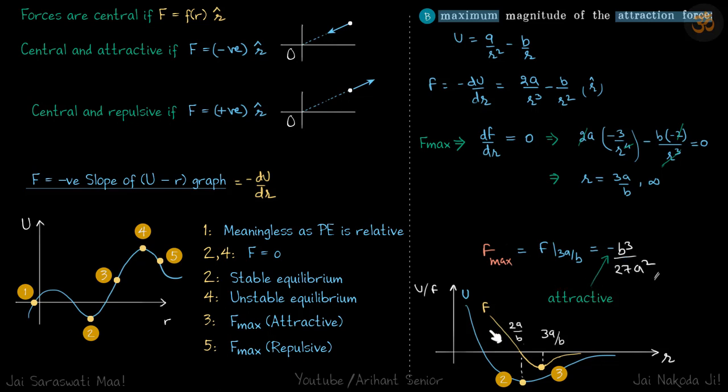Now plotting, U will look like this and force will look like this. Let's take two points. When dU by dR is zero, that means force is zero. What can you comment about equilibrium? It is stable equilibrium because it's at the bottom.